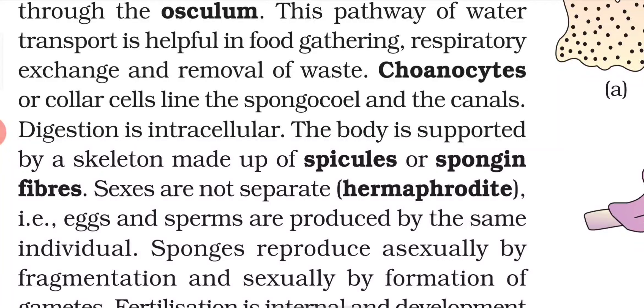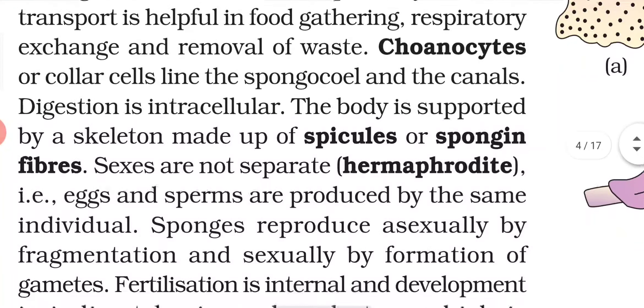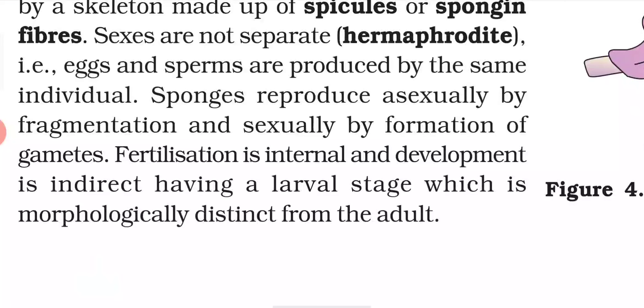Digestion is intracellular. The body is supported by a skeleton made up of spicules or spongy fibers. Sexes are not separate — both sex organs are present in the same organism, so they are hermaphrodites, and eggs and sperms are produced by the same individual. Sponges reproduce asexually by fragmentation and sexually by the formation of gametes. Fertilization is internal and development is indirect, so a larval stage is found that is morphologically distinct from the adult.